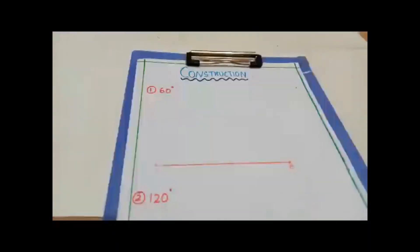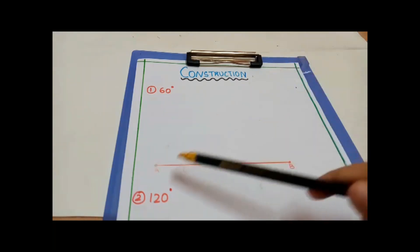Hi friends, welcome to Study Assistant. Today in this video we will be seeing how to construct basic angles using a compass, not the protractor. Our first angle is 60 degrees.